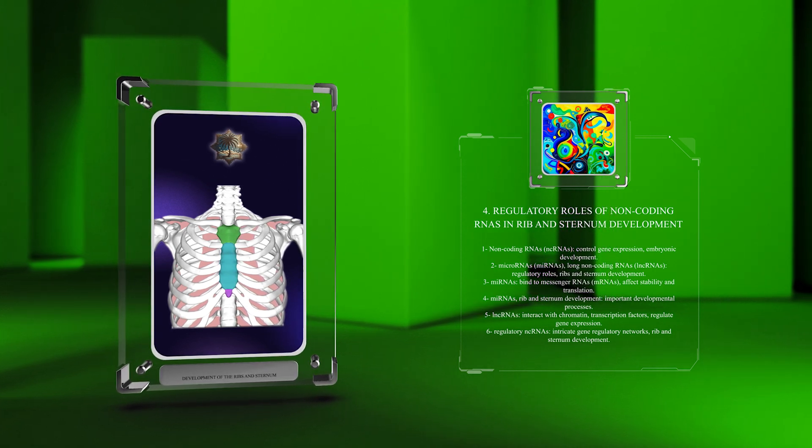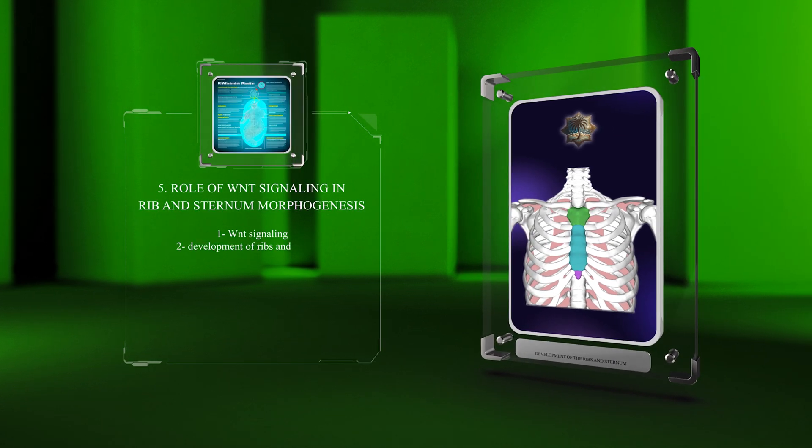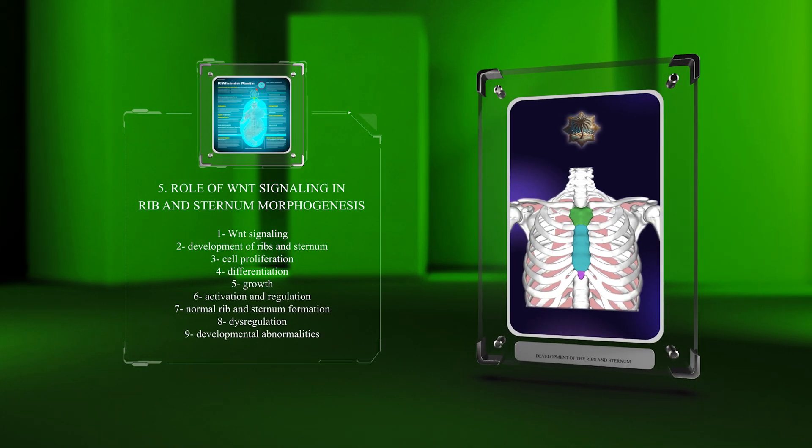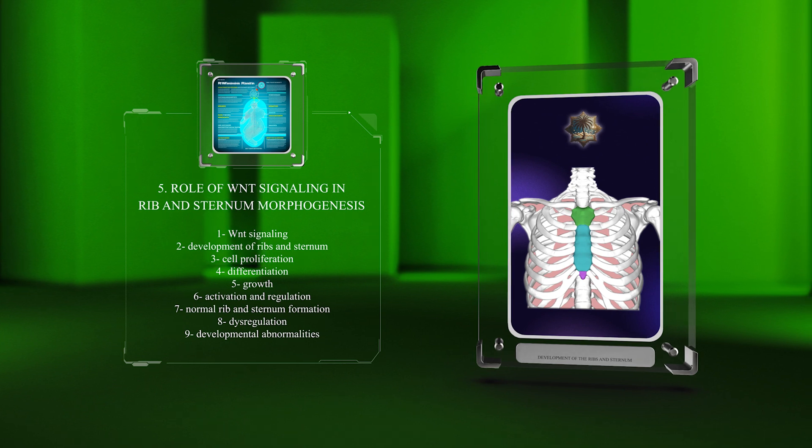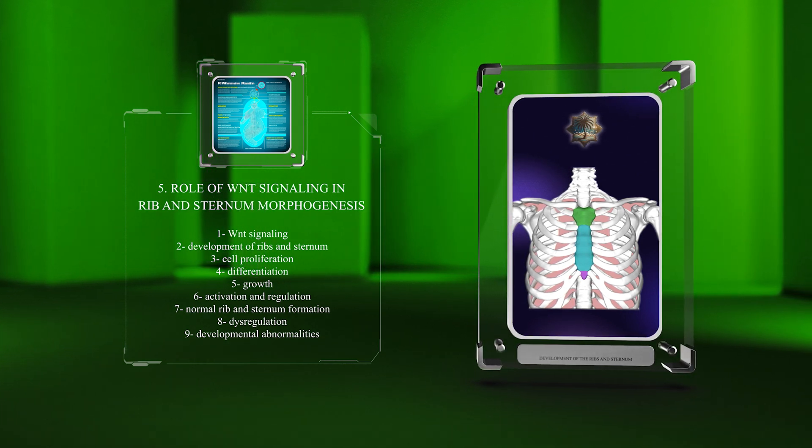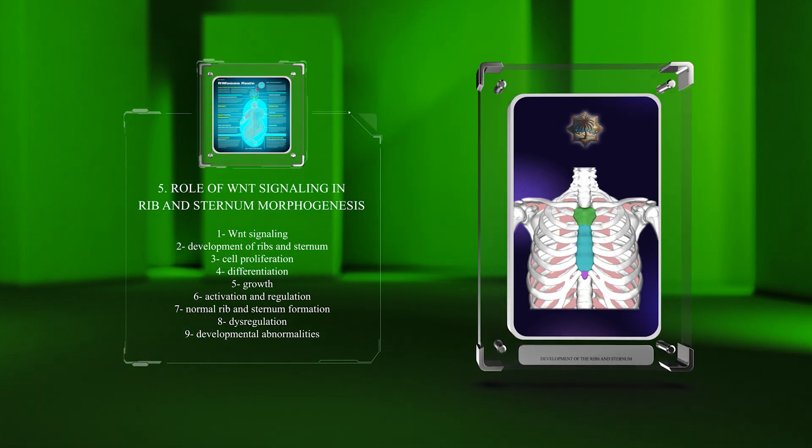Wnt signaling is important for the development of ribs and sternum. It regulates cell proliferation, differentiation, and growth. Proper activation and regulation of this pathway are essential for normal rib and sternum formation, while dysregulation can lead to developmental abnormalities.